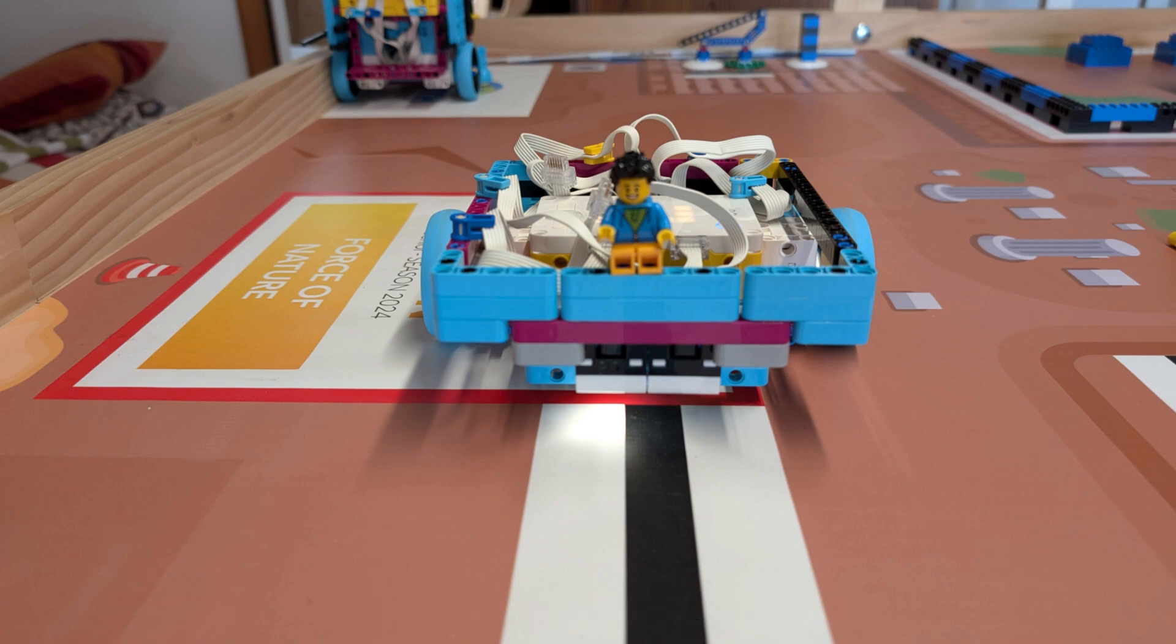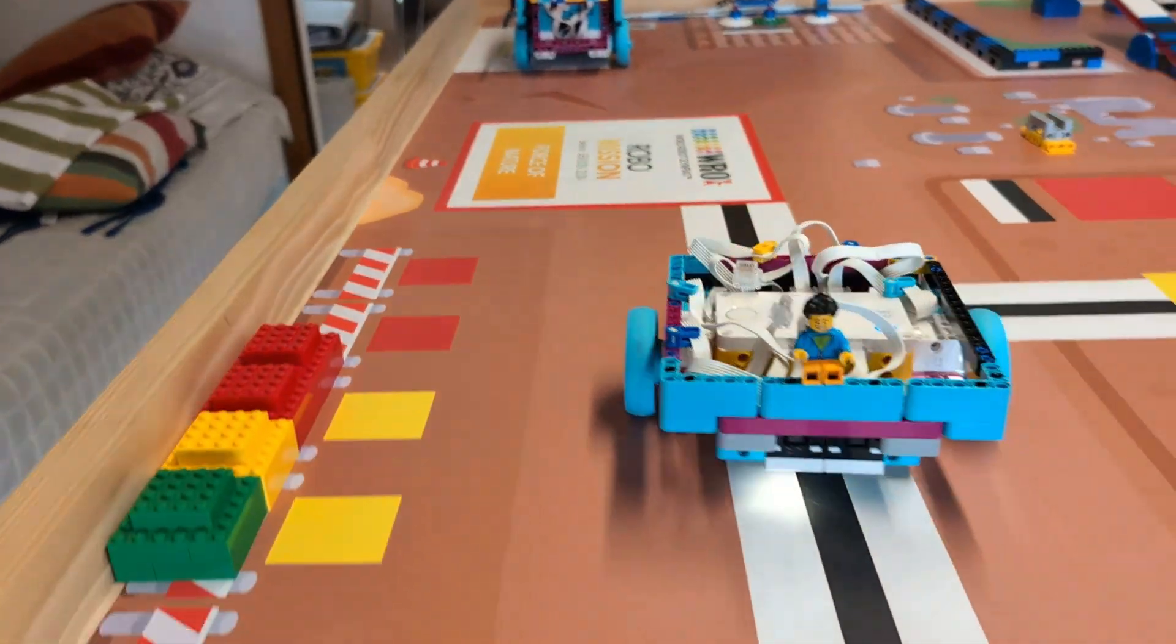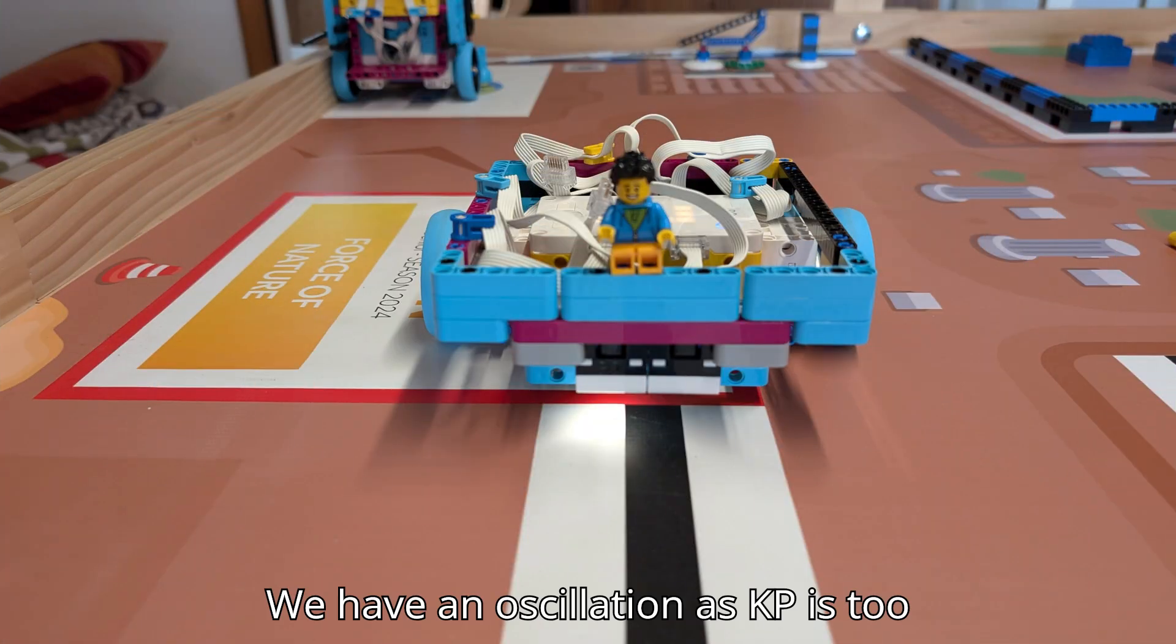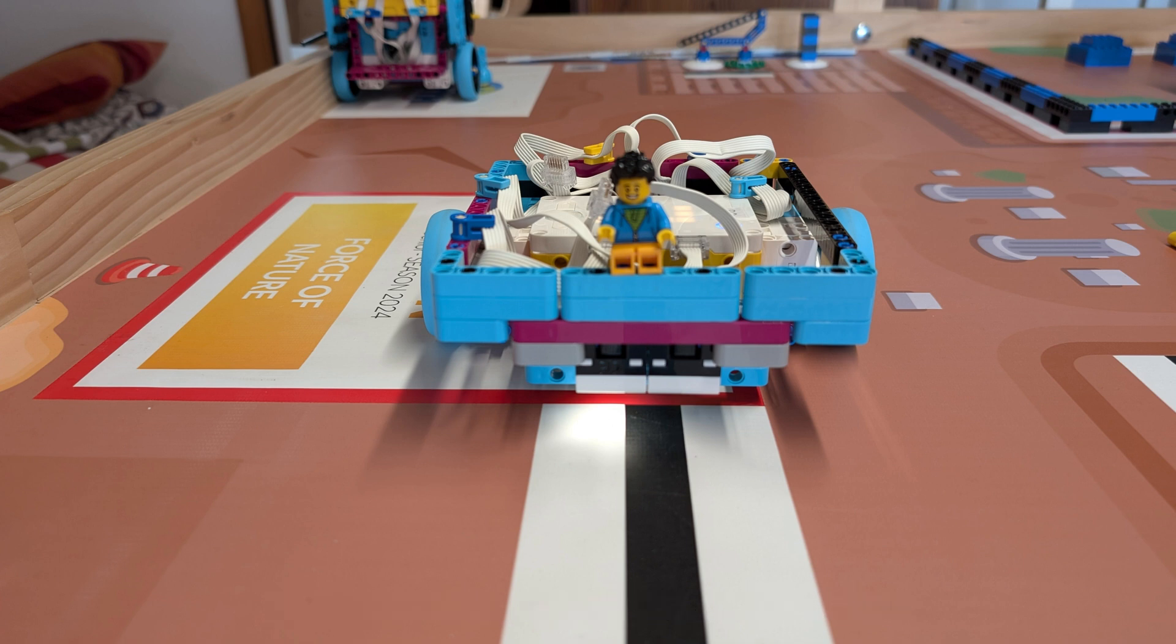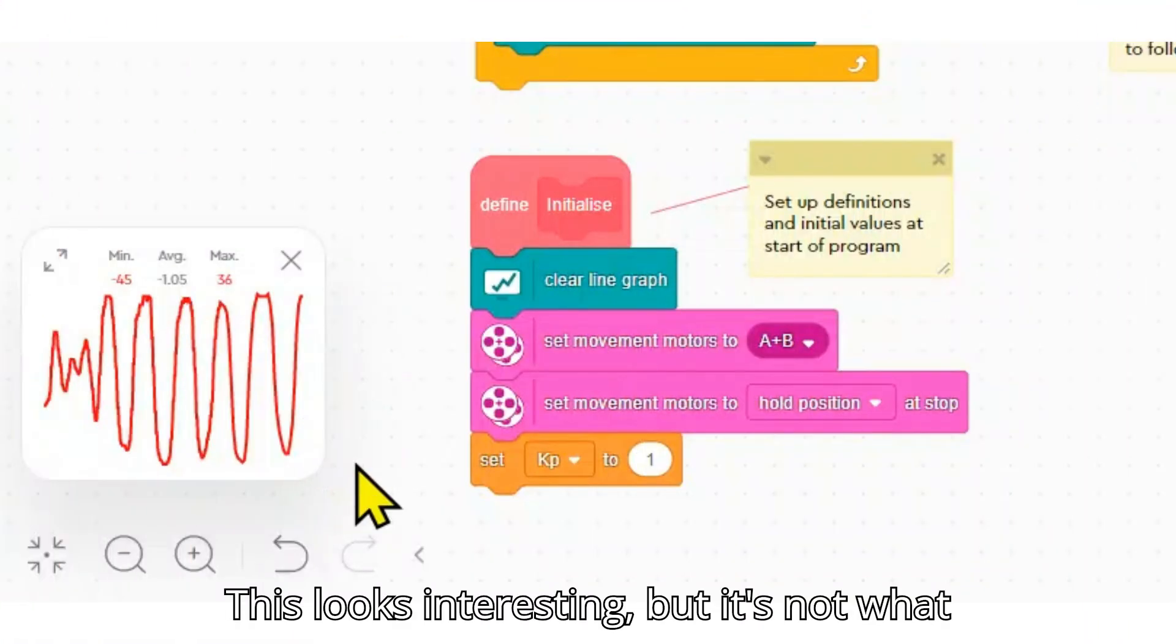And see what happens. We have an oscillation as KP is too large. This looks interesting but it's not what we want.